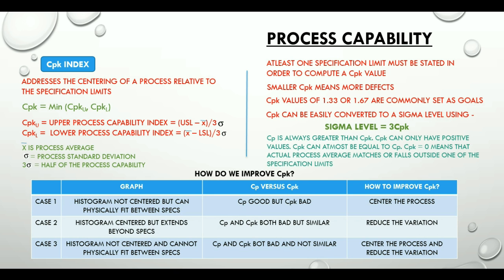Here is a summary table for the same. Case 1 is histogram not centered but can physically fit between the specification limits. This means that CP is good but CPK is bad. Hence, we should try to center the process.